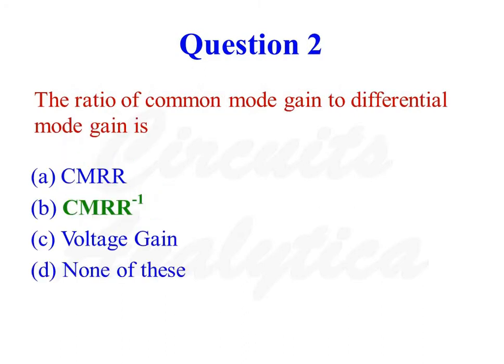The ratio of common mode gain to differential mode gain is 1 by CMRR, or CMRR raised to minus 1. The correct answer is option number 2.